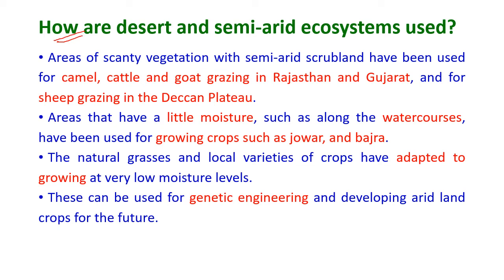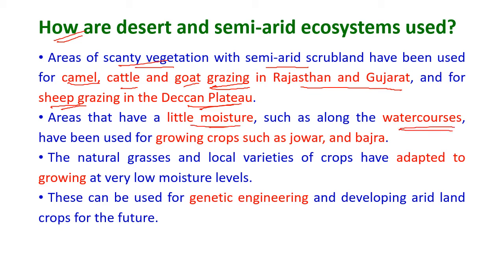The areas of scanty vegetation with semi-arid scrubland have been used for grazing of camels, cattle, and goats in Rajasthan and Gujarat, and for grazing of sheep on the Deccan plateau. Areas with a little moisture, such as along water courses, have been used for growing crops such as jowar and bajra. The natural grasses and local varieties of crops have adapted to grow at very low moisture levels.